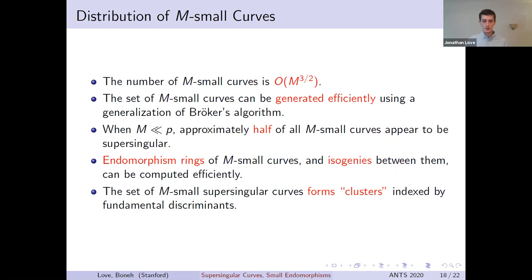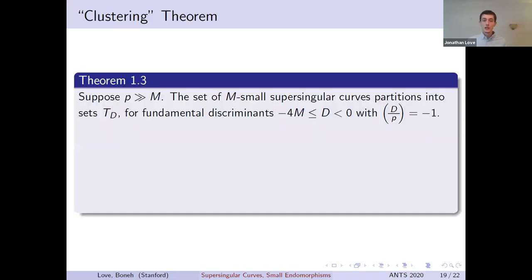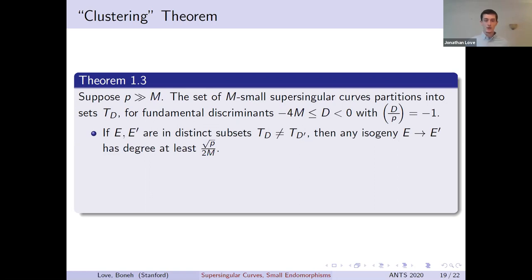The last property I want to discuss, which is the main result of our paper, is one describing the clustering of m-small curves. Precisely, for each negative fundamental discriminant d that's greater than −4m and not a square modulo p, we can define a subset T_d of m-small curves. These subsets T_d are arranged in a really nice way, in the sense that any two of them are very, very far apart. The shortest isogeny between two distinct subsets T_d has degree at least √p / 2m. Which, recall, we chose p to be massive, so this is a huge degree isogeny. On the other hand, if two curves are in the same set T_d, then one can form a chain of short isogenies linking the two curves that stays entirely within T_d.